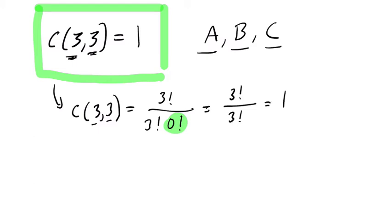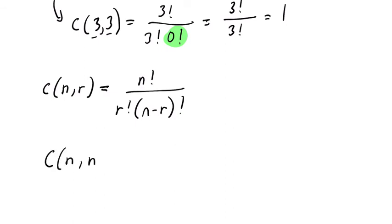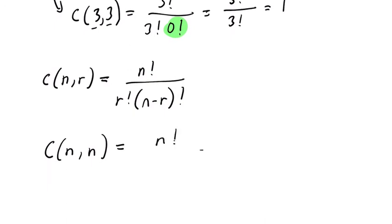In general, the definition of combination, n choose r equals n factorial over r factorial times n minus r factorial. But what if we're looking at the special case where we have n objects and we're choosing n of them? So we have n factorial over r factorial is n factorial. And then we have n minus n factorial here. Well, look at that. We've got n minus n, which is zero. So we have n factorial over n factorial times zero factorial.